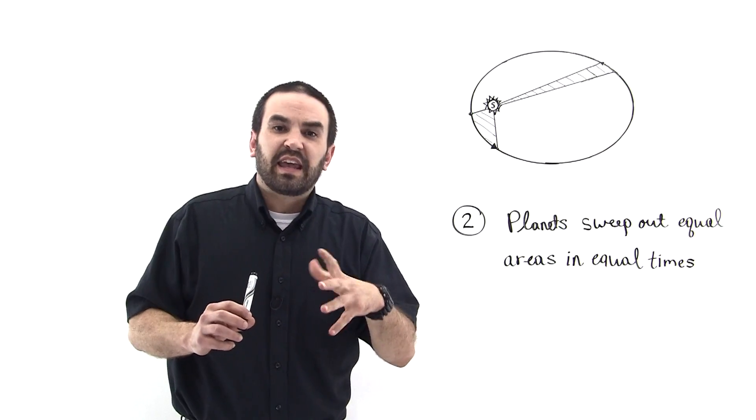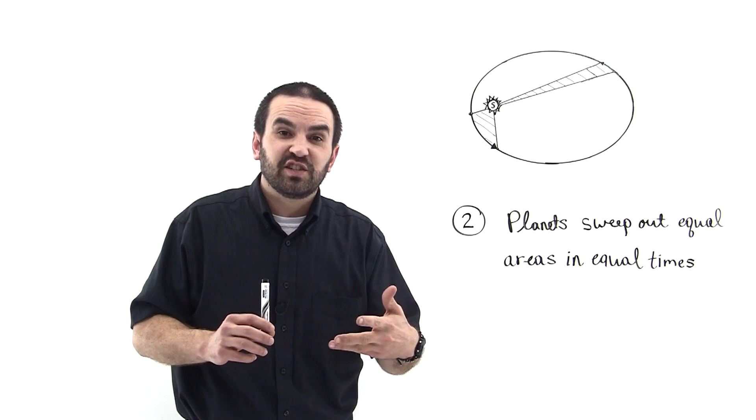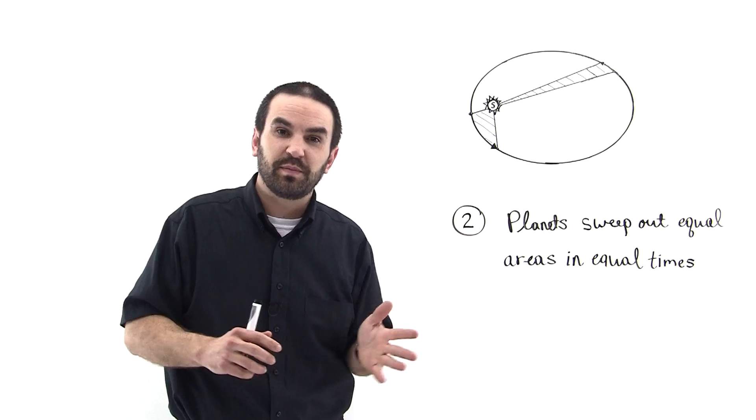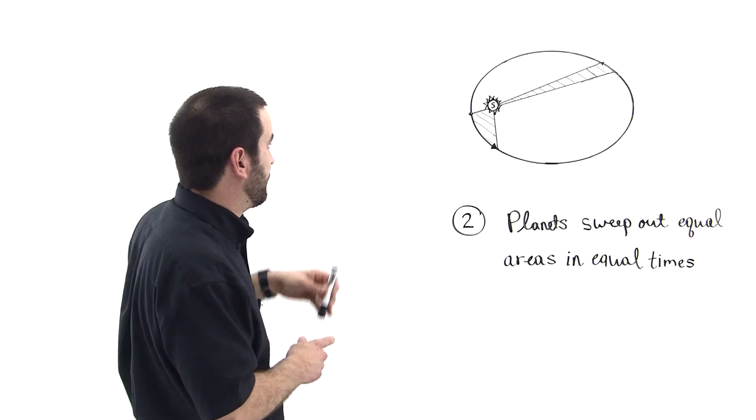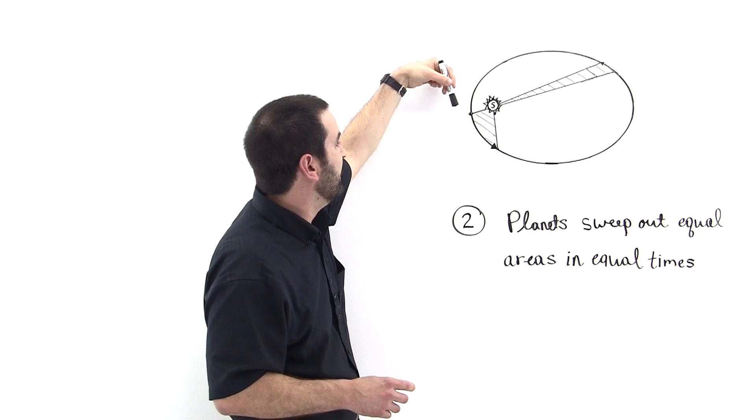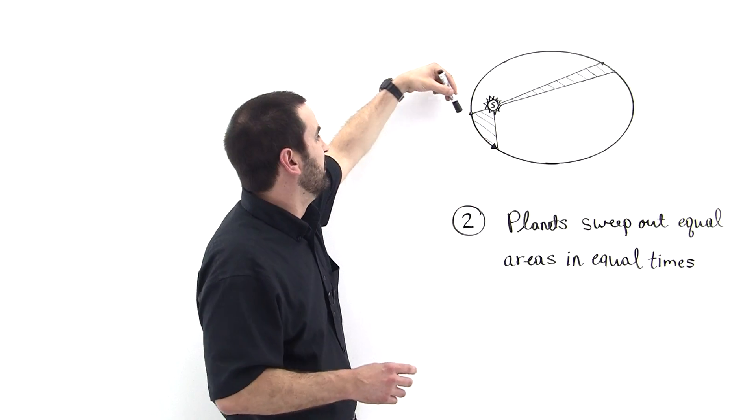So Kepler argued that the time rate of change of the area that the planet sweeps out must be equal to a constant value because look, whenever the planet is here, it's hauling the mail, it's zipping along. So in some time interval delta T,